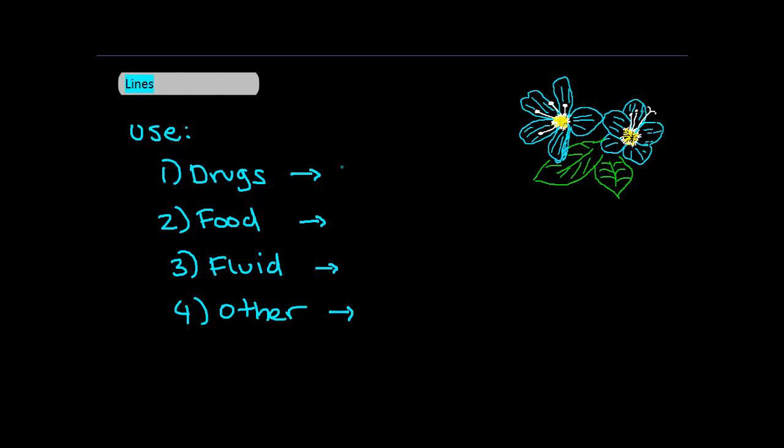So for drugs, you can use these lines for administration of irritant drugs because the large vein allows the drugs to be rapidly diluted. You can also use this for administration of vasoactive or inotropic drugs that cannot be given peripherally.